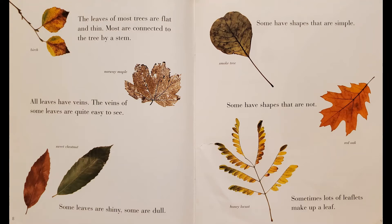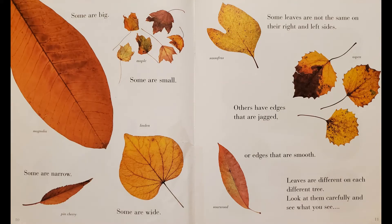Some leaves are shiny, some are dull. Some have shapes that are simple, some have shapes that are not. Sometimes lots of leaflets make up a leaf. Some are big, some are small.